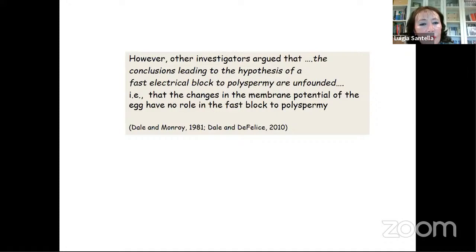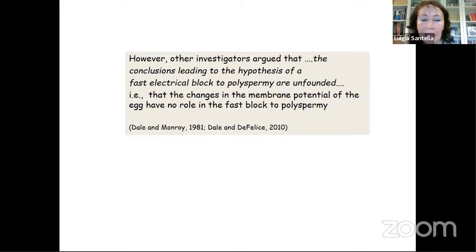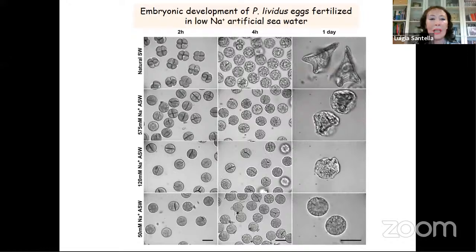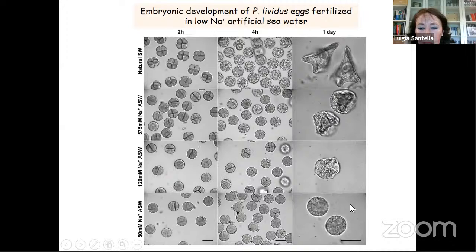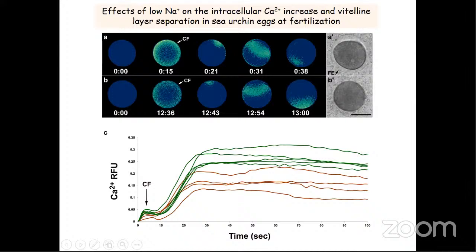However, other investigators argued that the conclusion leading to the hypothesis of a fast electrical block to polyspermy is unfounded — that changes in membrane potential have no role in the fast block. I was an undergraduate student in 1981 working on my experimental thesis using starfish as animal model, and I still remember the vivid discussion at that time. We repeated the experiment — when we decrease sodium concentration in sea water, embryonic development is dramatically altered compared to the control.